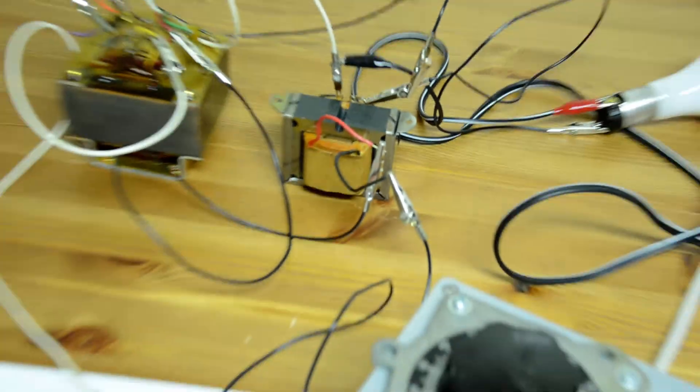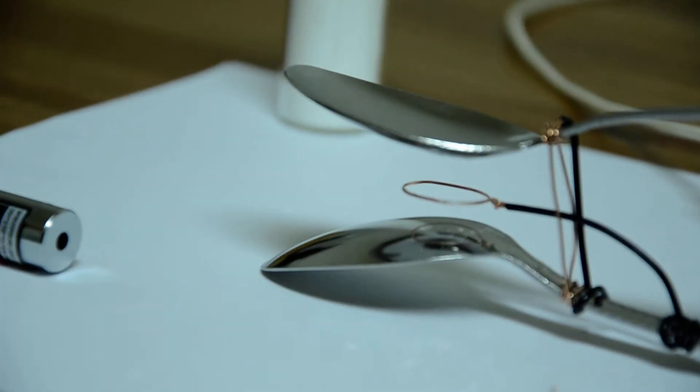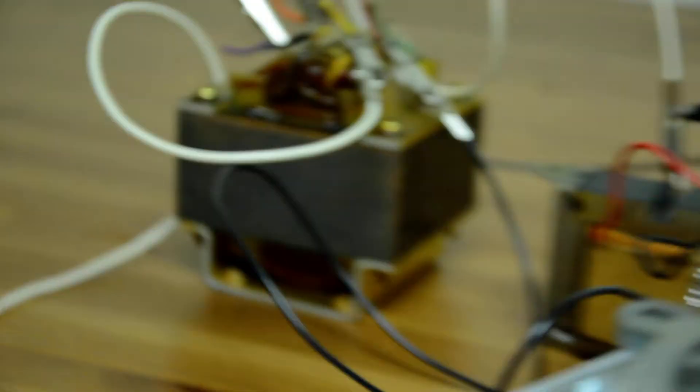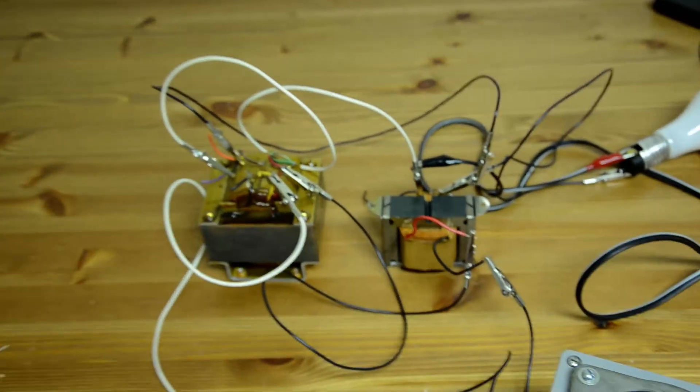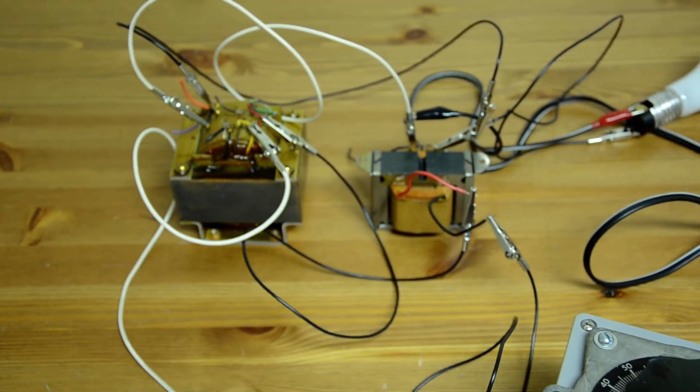They go to one end of a transformer, and on the other end of the transformer is that loop of wire. I actually have two transformers in series because I don't have one transformer that's high enough voltage at the moment.